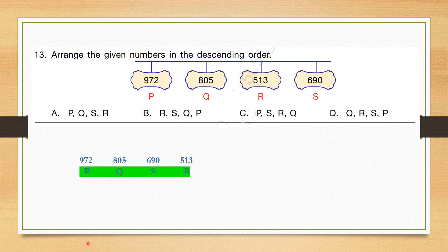Question number 13: Arrange the given numbers in descending order. In descending order: maximum is 975, then 805, then 695, then 530 — giving the sequence PQSR. So the correct answer is option A.